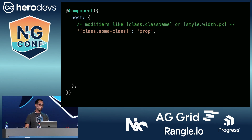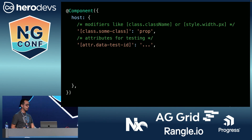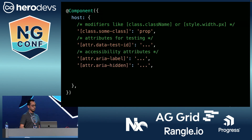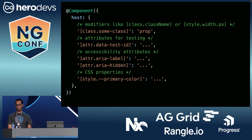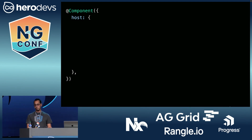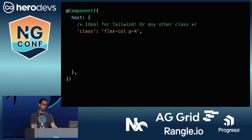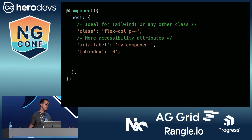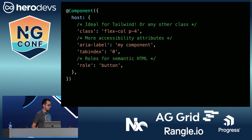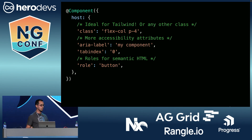You can use this for anything you would write in the template on an element: bindings like class.classname or style.width.unit, attributes for testing, accessibility, or CSS properties. I like using this pattern to bind to custom properties to keep logic out of JavaScript — if you need to toggle styles, this is a great way to do that. You can also use the host property to apply static classes, so fans of Tailwind will rejoice. Or other accessibility attributes you don't need to make dynamic, like aria-labels and tab-indexes. A pretty important one that's often overlooked are roles — you can make an element be treated like a semantic element just by using roles in the host of your component.